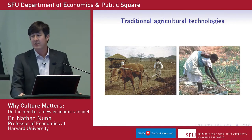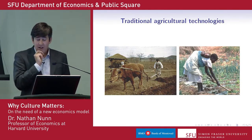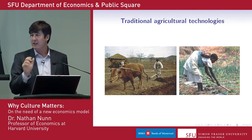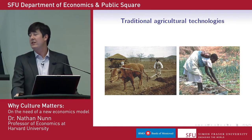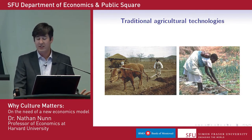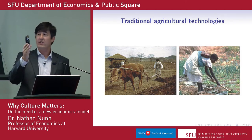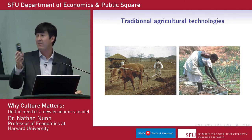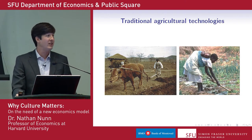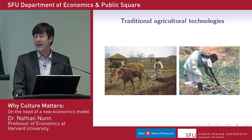It turns out — again, this is research I've done with co-authors — that a big chunk of this, maybe 30%, can be explained by what technologies societies used hundreds of years ago, even thousands of years ago. Prior to industrialization, the vast majority of people were in agriculture, and there were two dominant forms of agriculture back then.